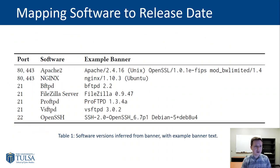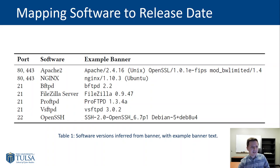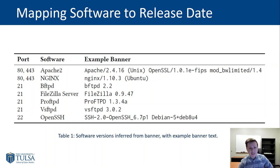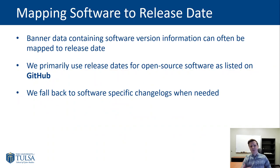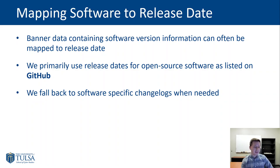As an example, here are a few of those banners we were able to grab and the software associated with them. We can see a lot of these have version info. Stuff that didn't have version info is not useful to us. In the case of OpenSSH you can see there's something else there. Apache actually includes several different versions — the OpenSSL version, etc. We can actually map those version numbers to a release date utilizing GitHub and software-specific changelogs.